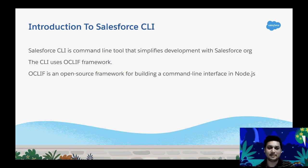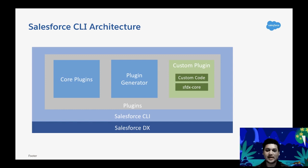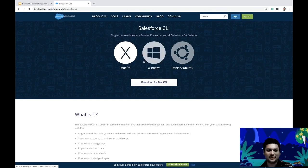For Salesforce CLI plugin development, you use Salesforce CLI as the core. When you install Salesforce CLI, you'll see core plugins, plugin generators, and custom plugins. Core plugins provide an out-of-the-box toolset, and the plugin generator is a scaffolding tool that lets you scaffold a plugin development project. To install Salesforce CLI, go to developer.salesforce.com/tools/sfdx-cli and choose the installer for your operating system.